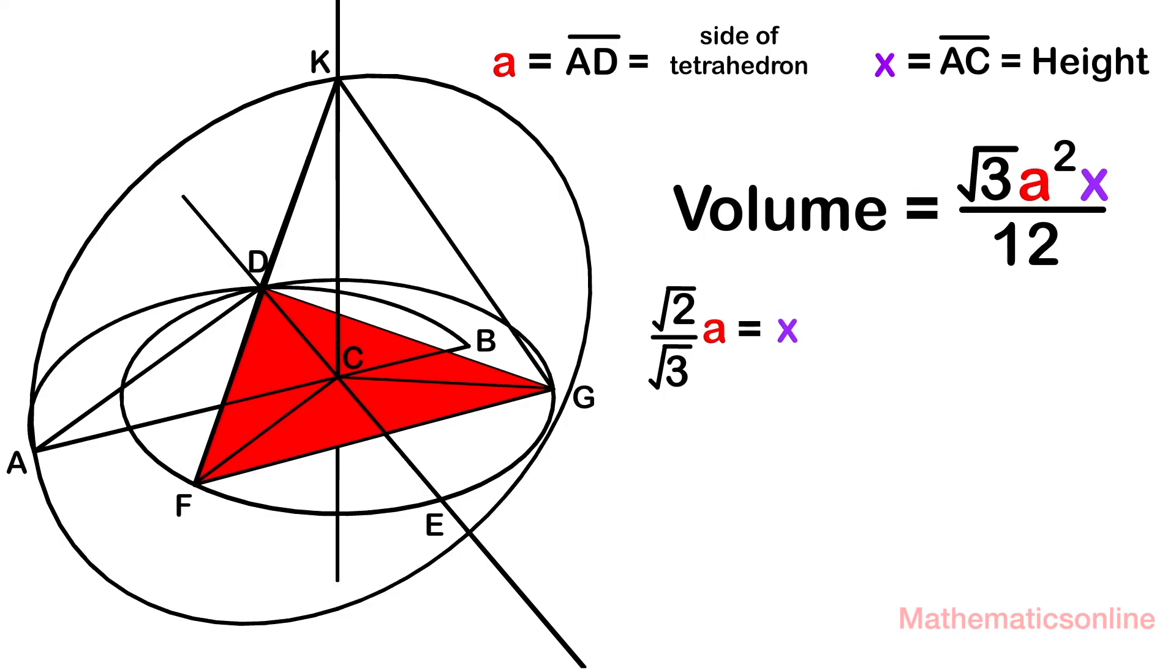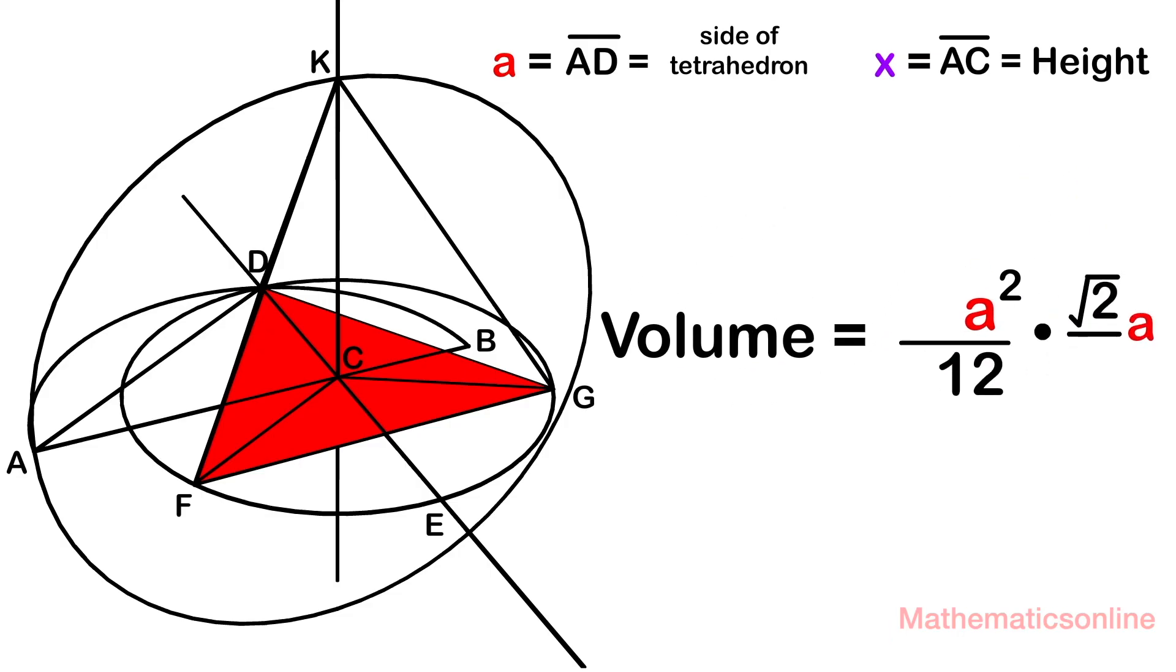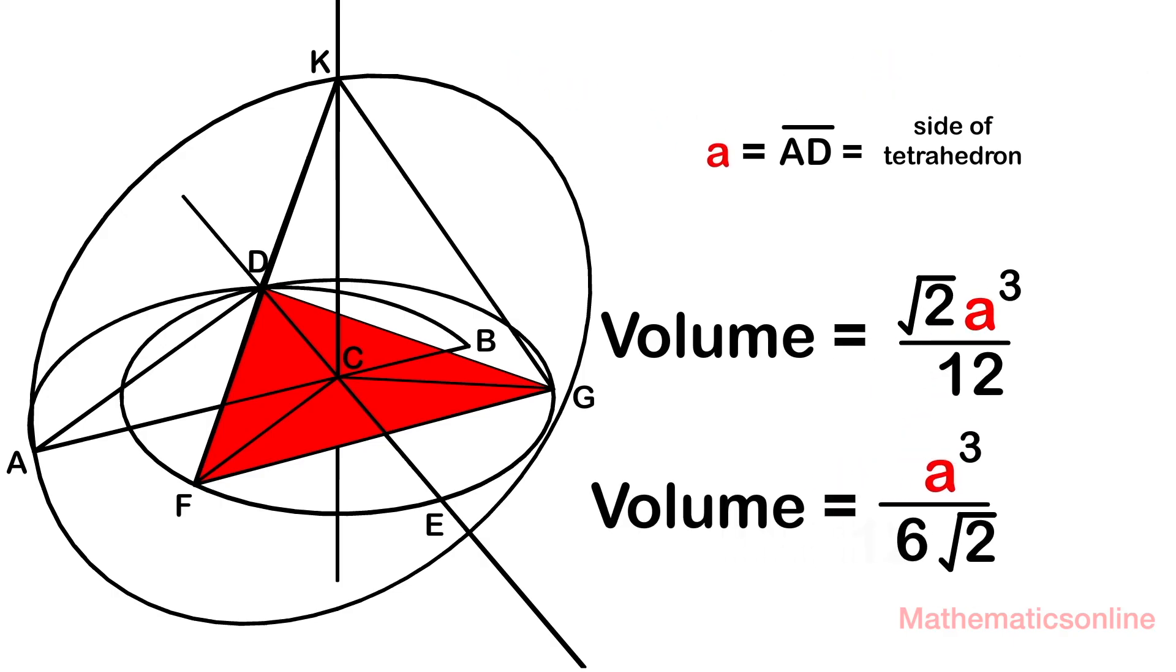Let's substitute this into the volume formula. And we have that the volume of a tetrahedron is equal to the square root of 2 times a cubed divided by 12. And if you search on Google, it shows that the volume of a tetrahedron is a cubed divided by 6 times the square root of 2. And so either of these formulas is going to work.